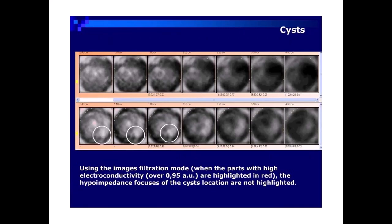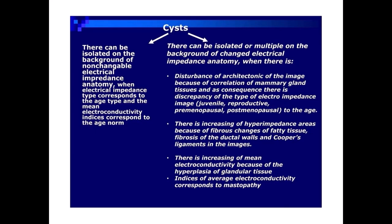Using the image filtration mode, when parts with high electroconductivity over 0.95 AU are highlighted in red, the hypo-impedance focuses of the cysts' location are not highlighted. Cysts can be isolated on the background of non-changeable electrical impedance anatomy, when the electrical impedance type corresponds to the age type and the mean electroconductivity indices correspond to the age norm. They can also be isolated or multiple on the background of changed electrical impedance anatomy, when there is disturbance of architectonics of the image due to correlation of mammary gland tissues, and as a consequence there is discrepancy of the electro-impedance image type — juvenile, reproductive.